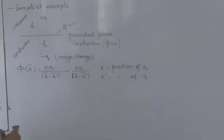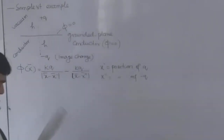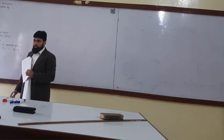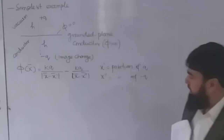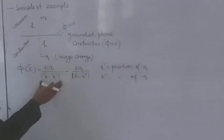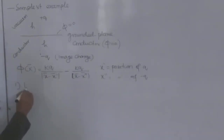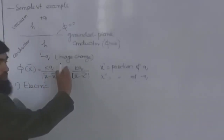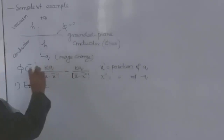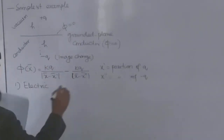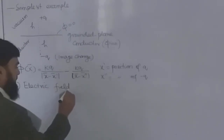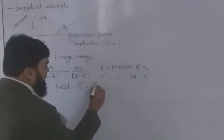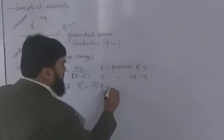To find the electric field for such a geometry, we write the potential first and then derive the electric field from it. The electric field is E equals minus the gradient of phi. The normal derivative of the potential gives the electric field at the surface.